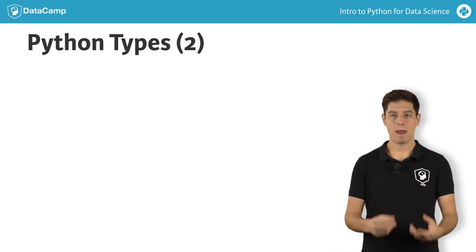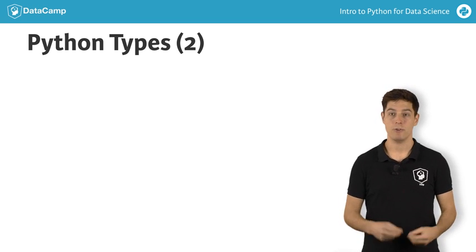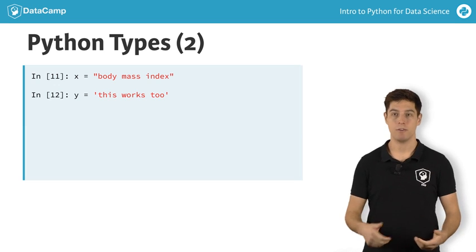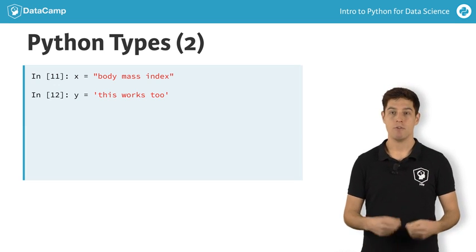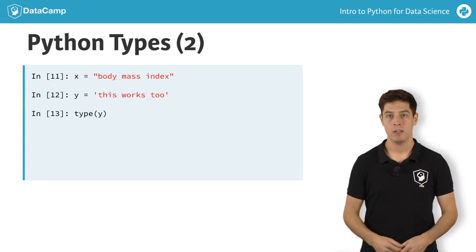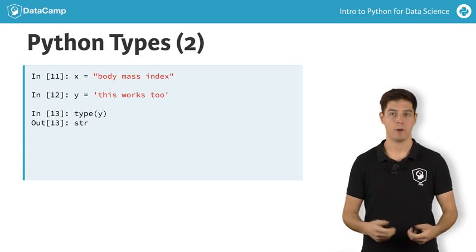A string is Python's way to represent text. You can use both double and single quotes to build a string, as you can see from these examples. If you print the type of the last variable here, you see that it's str, short for string.